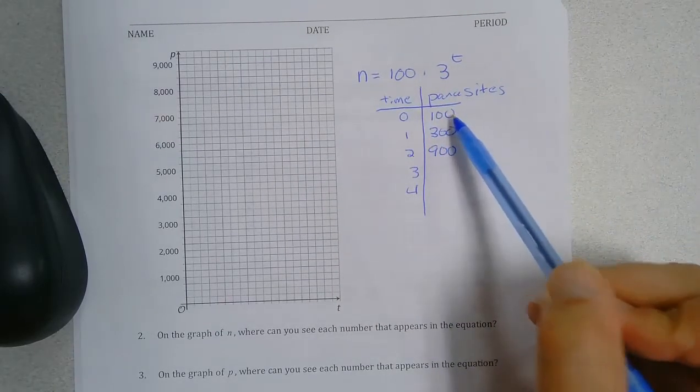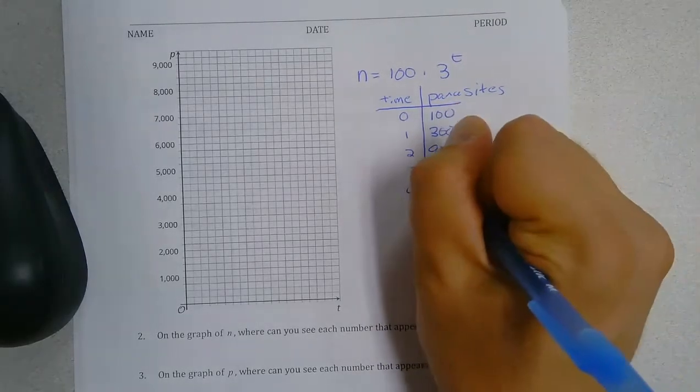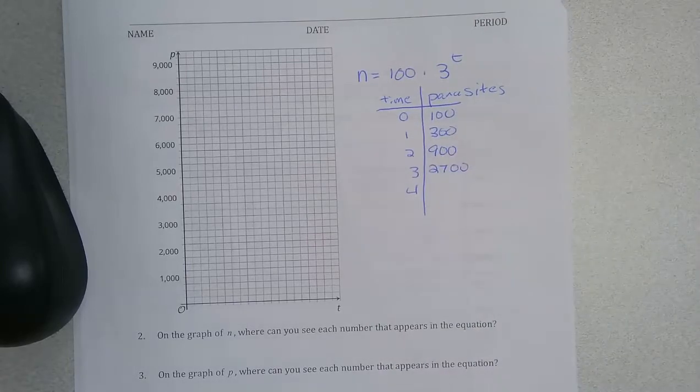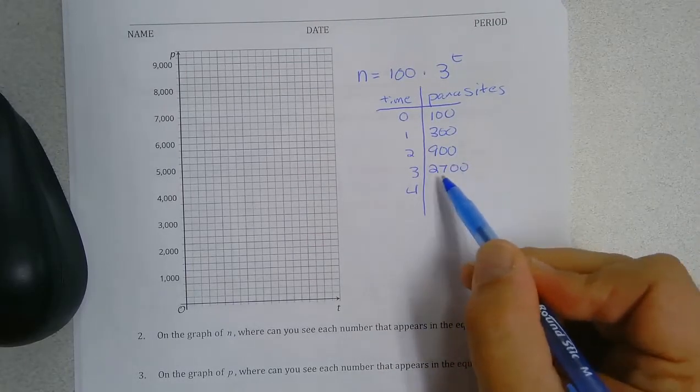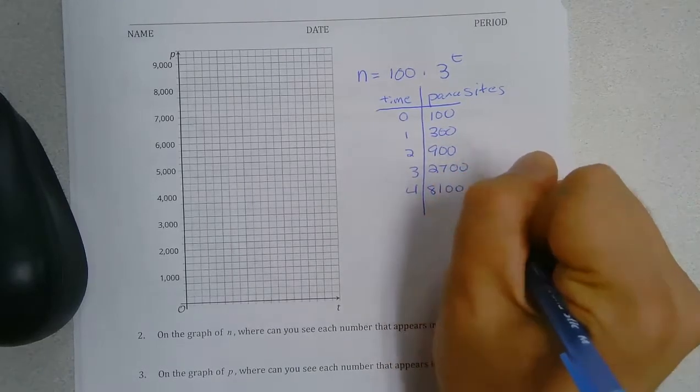And then, if you notice, we just keep multiplying by 3. 900 times 3 is 2,700. And 2,700 times 3 is 8,100.